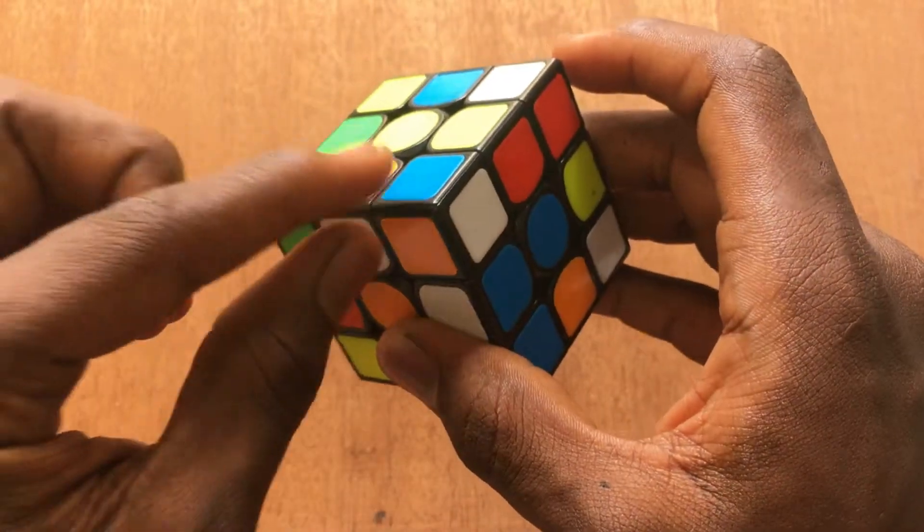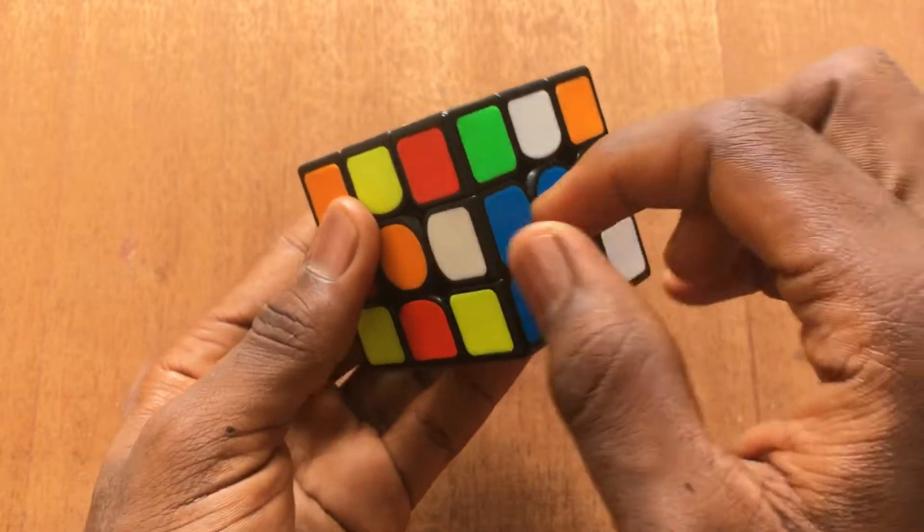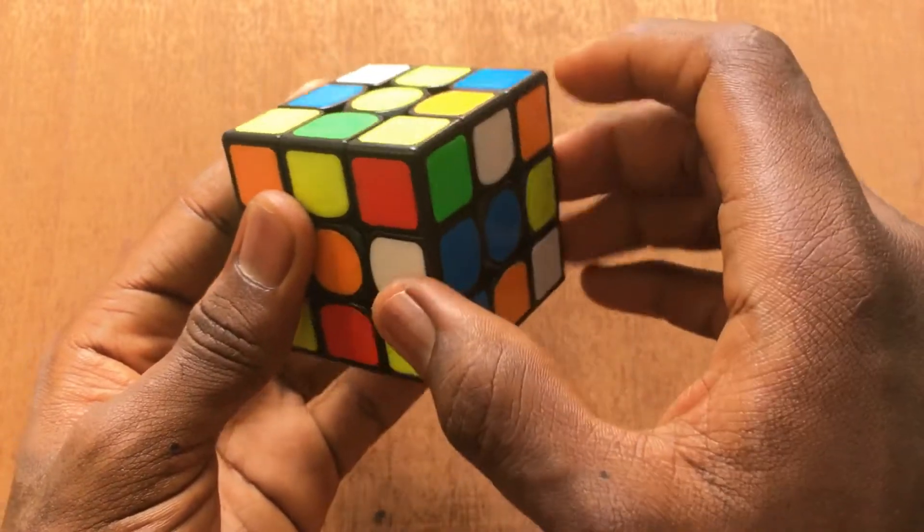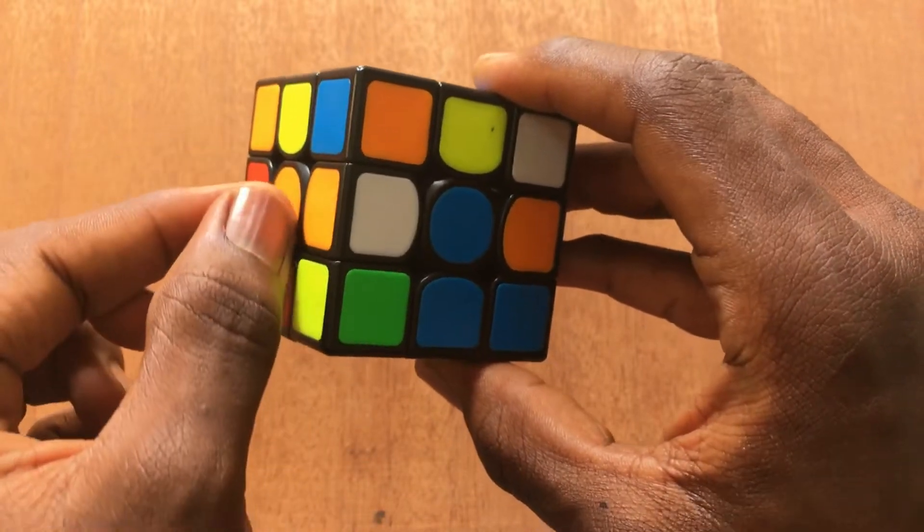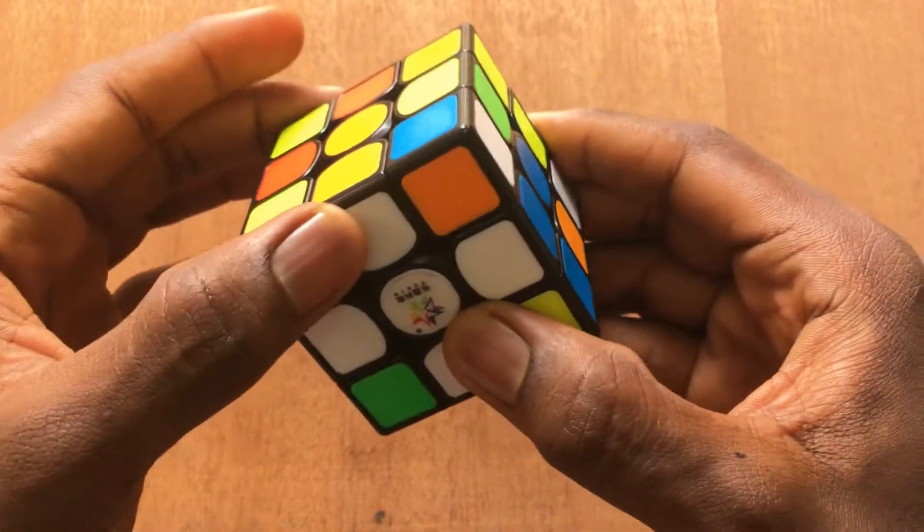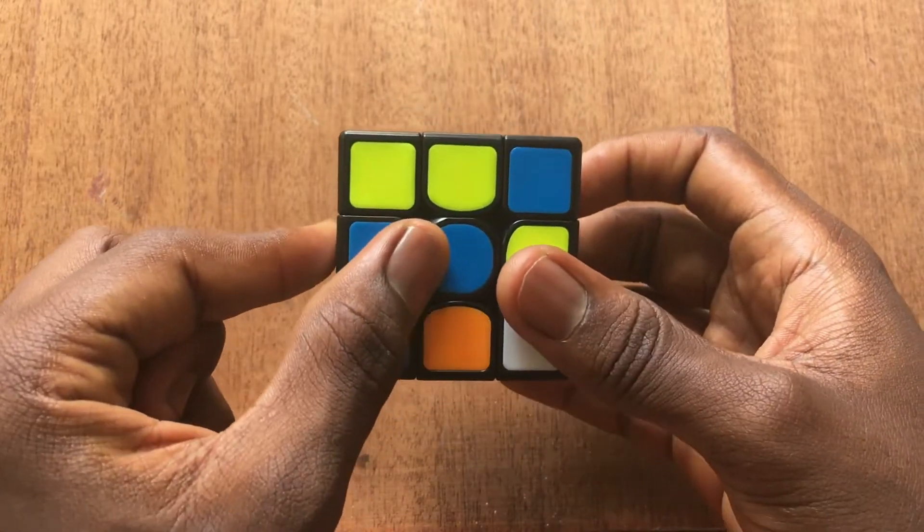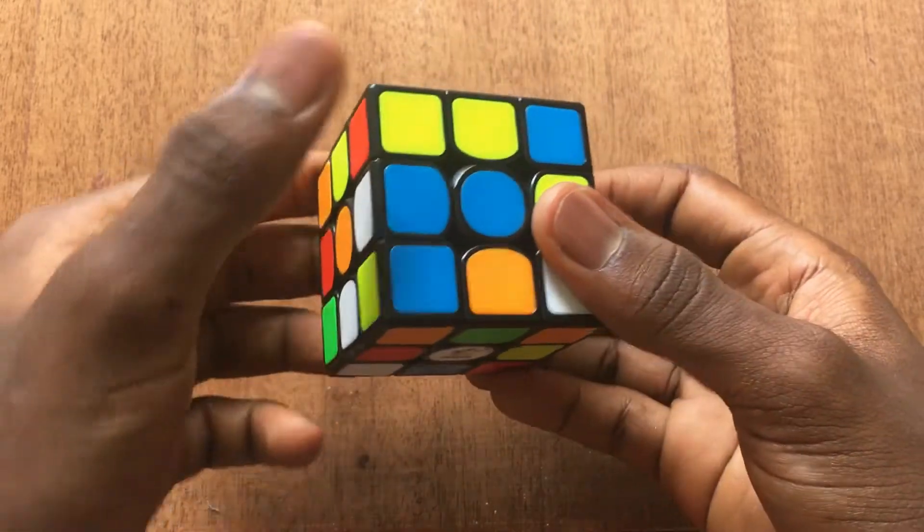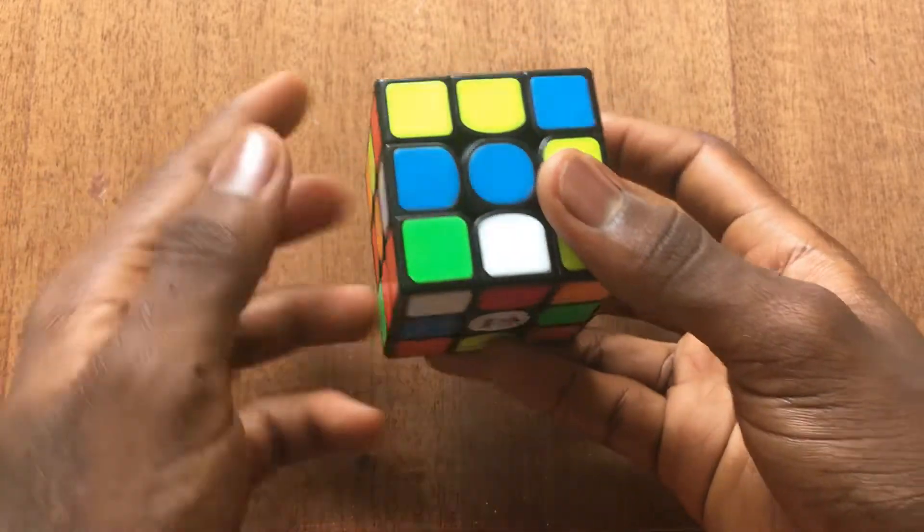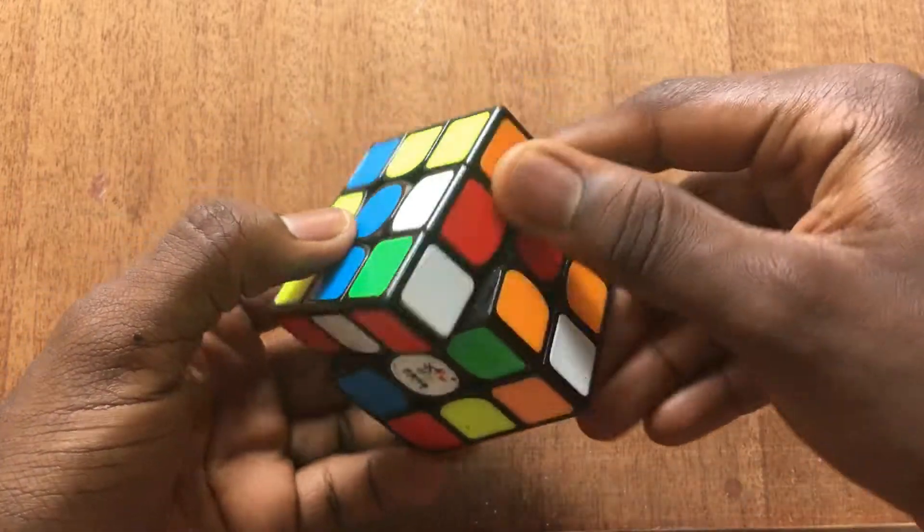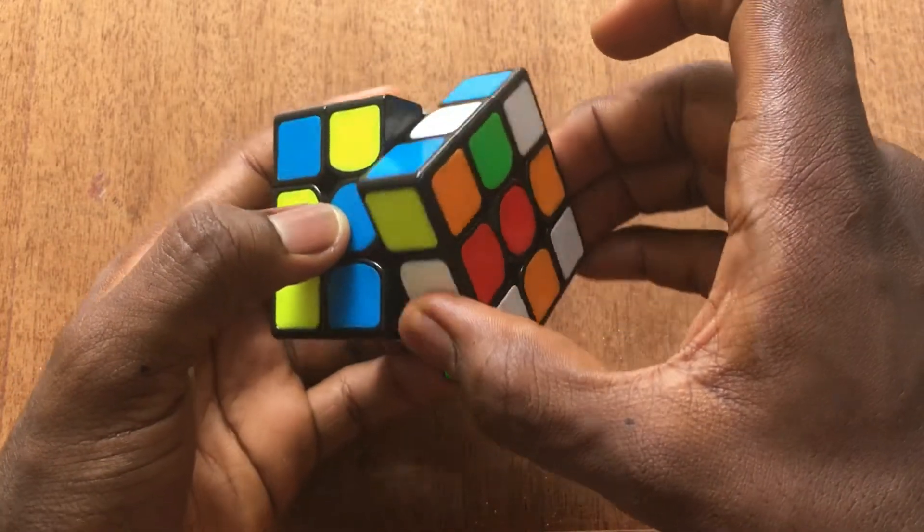For example, here this is a bad edge and I can put this on top of this green white edge which is a good edge. So as I insert this, we can see that this is turned into a good edge and can now be inserted with one move. The same thing also applies here, this is a bad edge and this is a good edge. So I can solve this by putting it underneath this blue white edge which is a good edge so that as I insert the blue white, this will be turned into a good edge that I can insert like this.